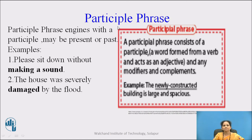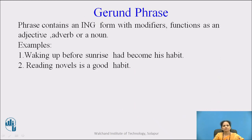The next one is participle phrase. A participle phrase begins with a participle, which may be present or past. Examples: 'Please sit down without making a sound' — here 'making' is a participle phrase. 'The house was severely damaged by the flood' — here 'damaged' is a past participle. Next is gerund phrase: a phrase containing an -ing form with modifiers, functioning as an adjective, adverb, or noun. Example: 'Reading novels is a good habit' — 'reading' is a gerund phrase.